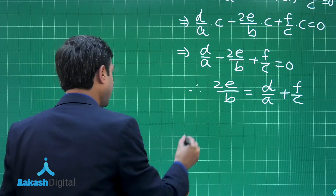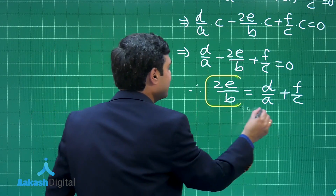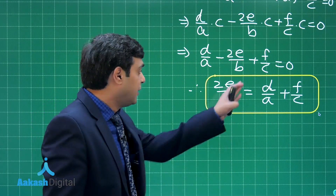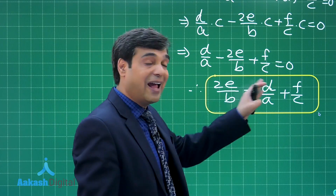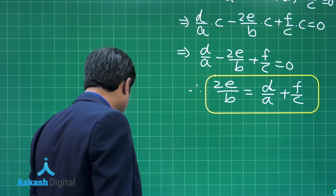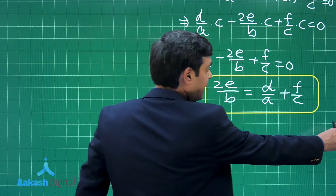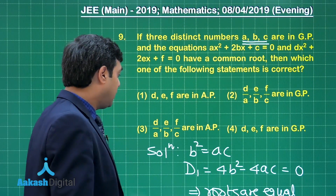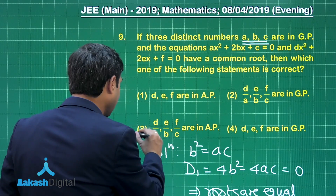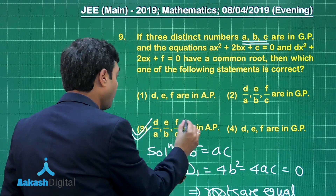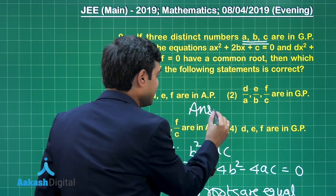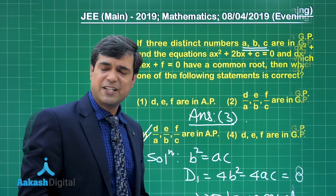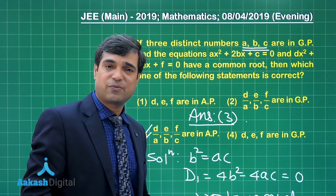From 2e/b = d/a + f/c, we get the final conclusion: d/a, e/b, f/c are in AP. Checking the options — d/a, e/b, f/c are in AP — that is option number 3, which is the correct answer for this question. Let us move on to the next question of this paper.